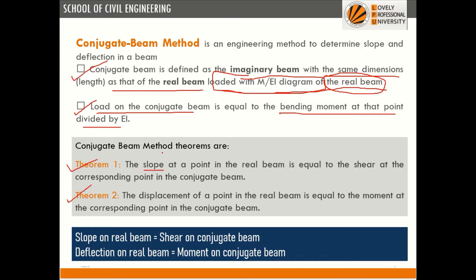To calculate slope using the conjugate beam method: the slope at a point in the real beam is equal to the shear force at the corresponding point in the conjugate beam. Similarly, the displacement at any point in the real beam is equal to the bending moment at the corresponding point in the conjugate beam.